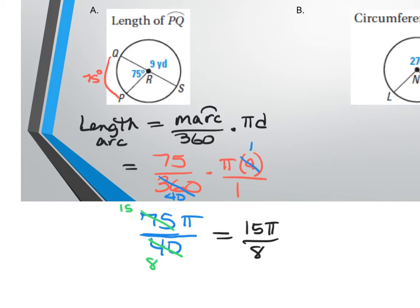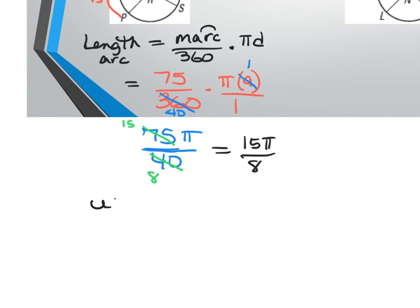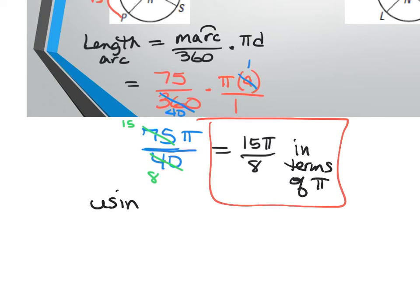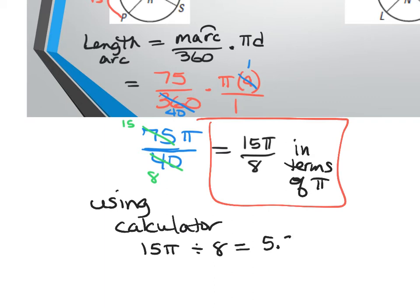You can't simplify 15π/8 further. If it says to use your calculator and use the π button, you'd compute 15π ÷ 8 ≈ 15.89. But on the quiz, you're leaving it in terms of pi, so the answer is 15π/8.